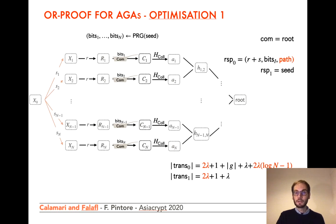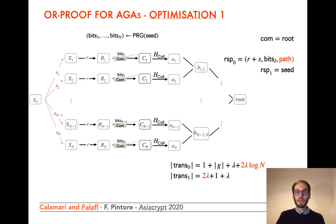When the challenge is one, the transcript size is 2λ plus 1 (commitment and challenge) plus λ (the seed). Simplifying, we obtain a formula showing that the proof size has become logarithmic in n. So the OR proof we have constructed is efficient.